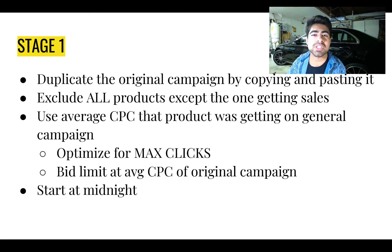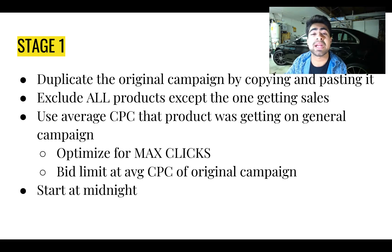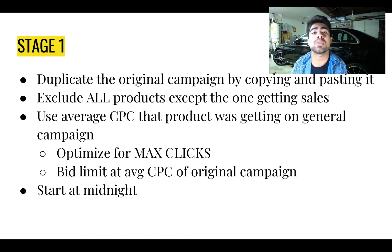Set the bid limit at what the original cost per link click was, and optimize this newly created campaign for maximized clicks. The reason we do maximized clicks is to give Google a better chance of understanding what the product is, what keywords to show it for, and what keywords not to show it for. Maximized clicks lets Google take care of that quickly and efficiently. Just because it is set to maximized clicks does not mean it's going to spend the full 25 cents — I currently have a campaign running with a max bid limit of around 20 cents but I'm getting an average link click of about 8 cents. Once Google gets the hang of exactly who to show it for, the costs will automatically reduce.